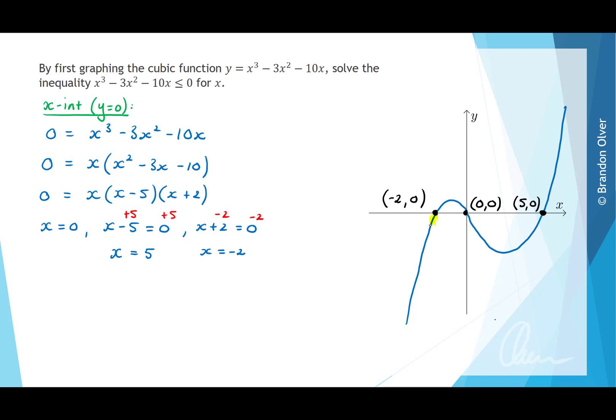So the parts of this graph that are less than or equal to 0 are the parts that are under the x-axis. So it's this part of the graph and this part of the graph.